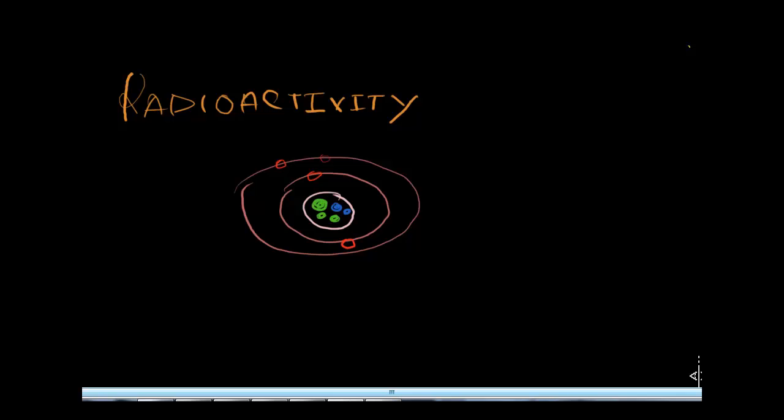Now as we know from our study of electrostatics that like charges repel, so how can the protons which are positively charged be held together? They are supposed to explode because each of the protons will repel each other. But how come they are still together as we see inside the nucleus?